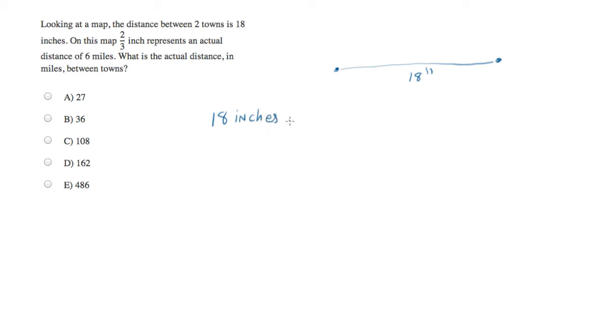18 inches. And let's multiply that by something which we know has a value of 1. And we've been told that 2/3 inch represents a distance of 6 miles. So 6 miles is the equivalent of 2/3 inches.